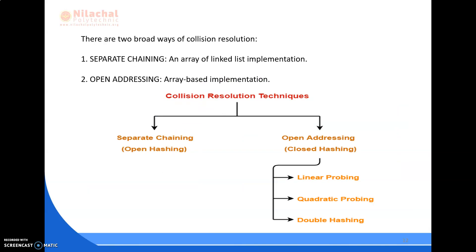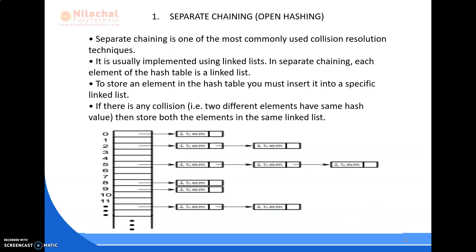The first is separate chaining, and the second is open addressing. Separate chaining involves an array of linked list implementations, whereas open addressing is array-based and is also known as closed hashing. Under open addressing, it is divided into three types: linear probing, quadratic probing, and double hashing. We will now study the first method — separate chaining, also known as open hashing.